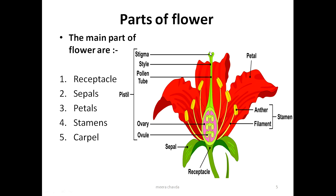The carpel has three parts: stigma, style, and ovary. Inside the ovary there are ovules. Carpels are also called pistils. The entire central organ is called the pistil, and the entire male structure is called the stamen. Stamen has two parts: anther and filament.